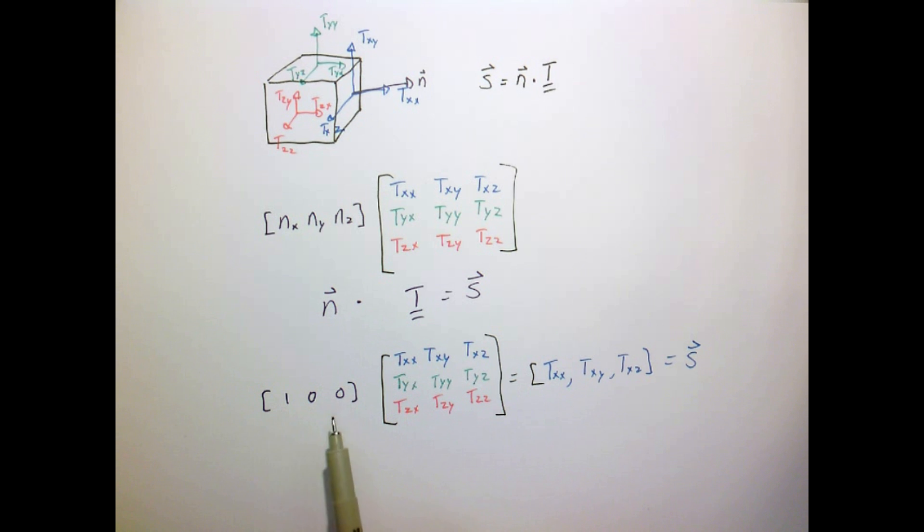And if I use the normal vector zero, one, zero, or zero, zero, one, I simply extract either the x, y, or z row. And again, these rows are all the forces or stresses that are acting on a face with the normal vector pointing in the x-direction, y-direction, z-direction.